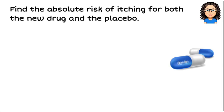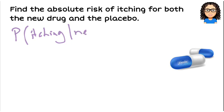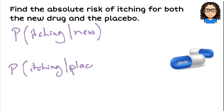So let's find the absolute risk of itching for both the new drug and the placebo. We want to find what is the probability of itching given that somebody was taking the new drug, and what is the probability of itching given that somebody was taking the placebo. That's what an absolute risk is — just finding these probabilities.